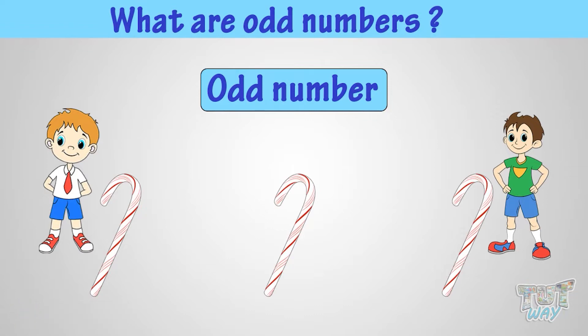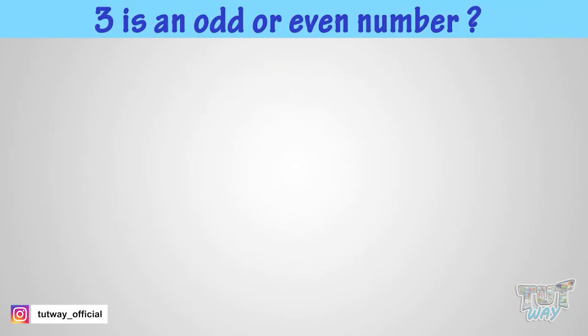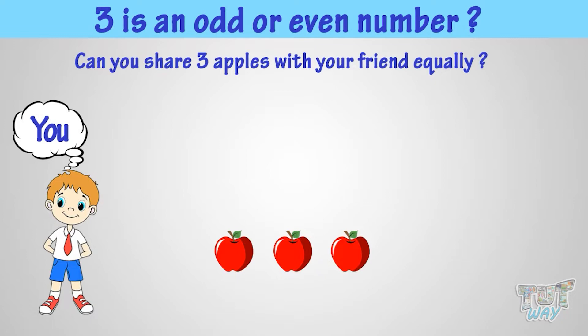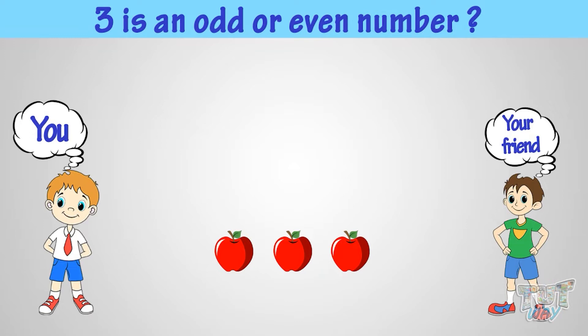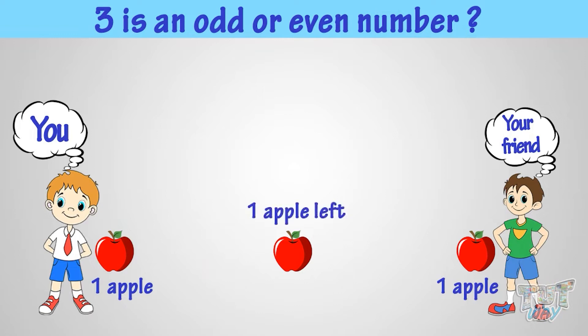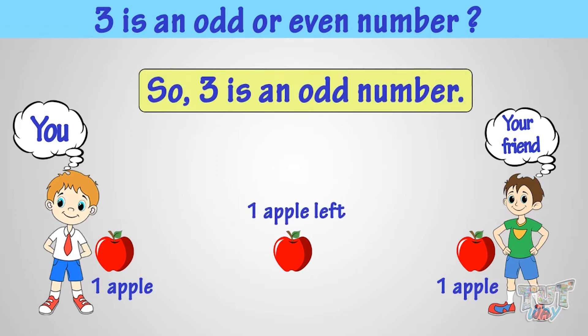Let's see if three is an odd or an even number. Can you share three apples with your friend equally? Let's try. Oh, you can't, as one apple is left. So three is an odd number, or three apples are odd number of apples.